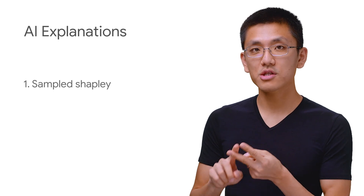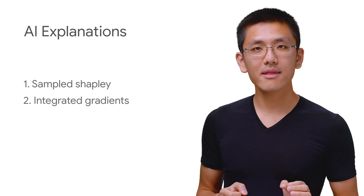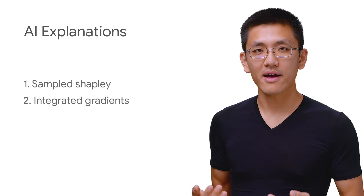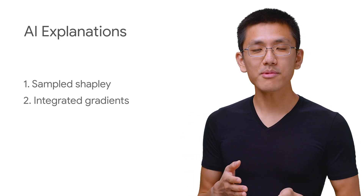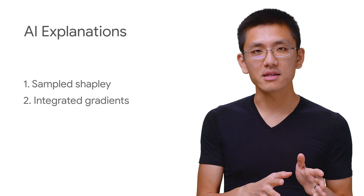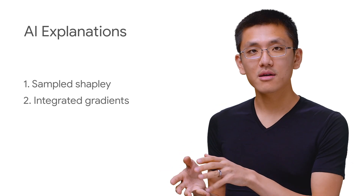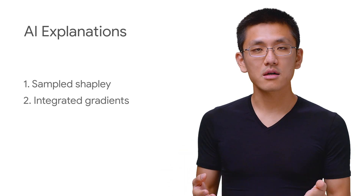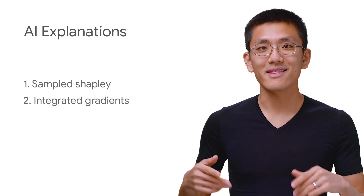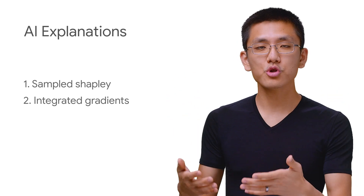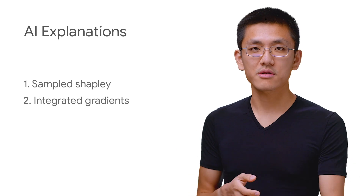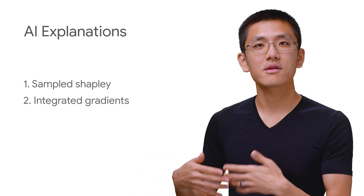Now let's talk a little bit about the particulars of feature attribution and how it works. AI Explanations offers two methods: sampled Shapley and integrated gradients. Both methods are based on the concept of Shapley values, which is a cooperative game theory algorithm that assigns credit to each player in a game for a particular outcome. Here, each feature is treated as a player in that game, and proportional credit is assigned to each of those features for the outcome of a prediction.